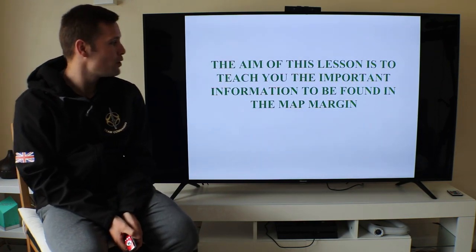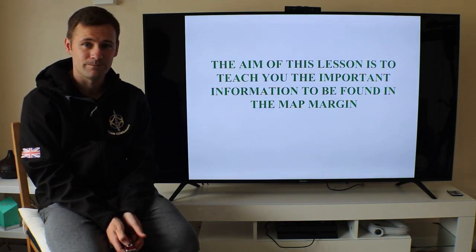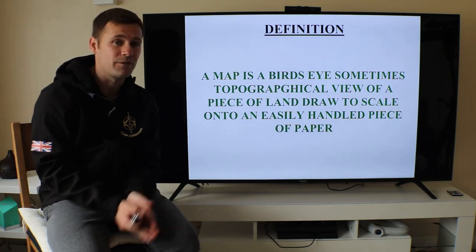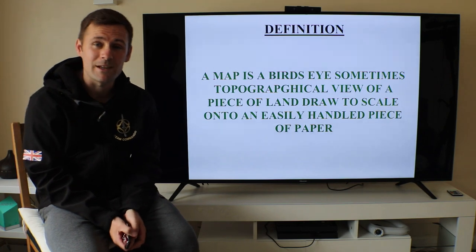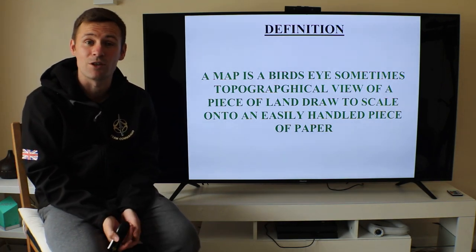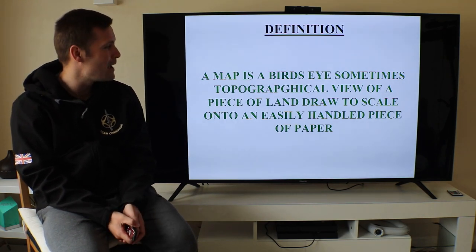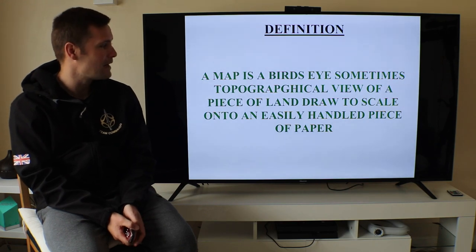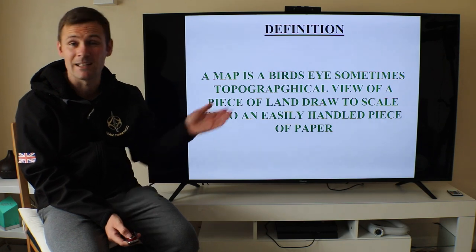The aim of this lesson today is to teach you the important information to be found in your map marginal information. The definition of a map — I covered this in our first episode briefly, but here it is written down: a map is a bird's eye, sometimes topographical, view of a piece of land drawn to scale on an easily handled piece of paper.